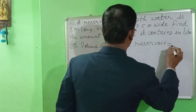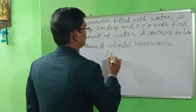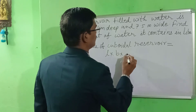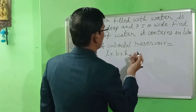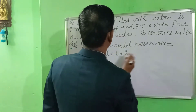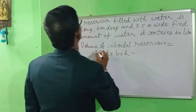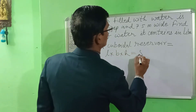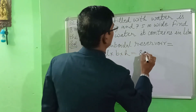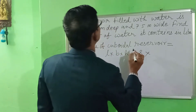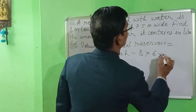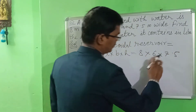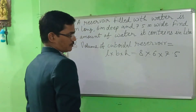So, volume of reservoir. You can write here: length, breadth, and depth — or height, or depth. So what is this? 8 into 6 into 7.5. So multiply here.